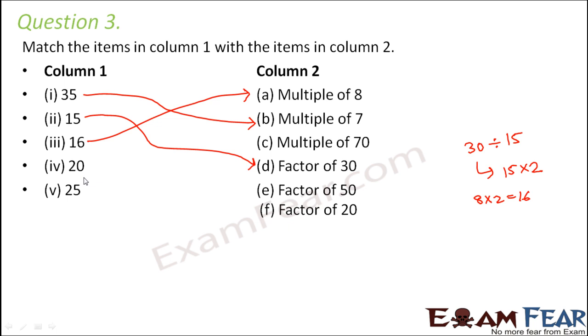20. So 20 is a multiple of 70, that is not possible because multiple of 70 has to be greater than or equal to 70. 20 is a factor of 50. That is also not true because if you divide 50 by 20, the remainder is not 0. A factor of 20, yes, because every number is a factor of itself.